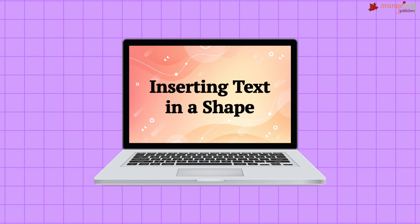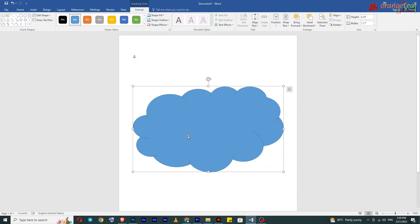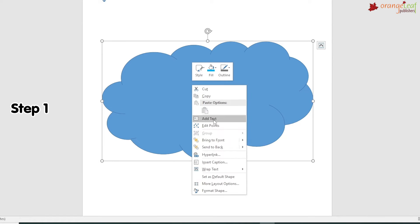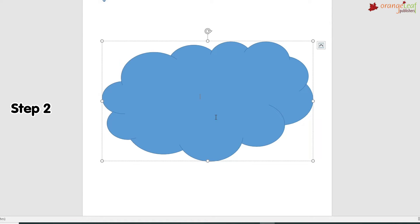Inserting text in a shape: you can also insert text in a shape. Follow these steps. Step 1: Right-click inside the shape — a sub-menu appears. Step 2: Select the Add Text option — the cursor will appear inside the shape. Step 3: Type the text, then come out by clicking anywhere on the screen outside the shape. The text appears in the shape.